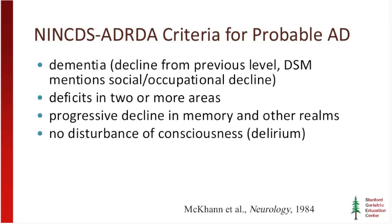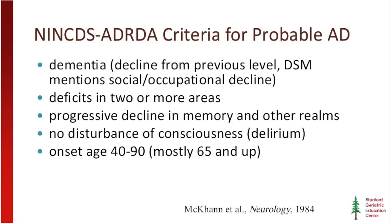This can't be in the setting of a disturbance of consciousness or delirium, so we would not make a diagnosis of Alzheimer's disease in a hospital setting. The age range is broad — ages 40 to 90 — though most sporadic Alzheimer's disease veers toward 65 and up. Earlier onset cases do occur and we want to be vigilant. Most importantly, there can't be any other explanation for the patient's presentation, which brings up the differential diagnosis.